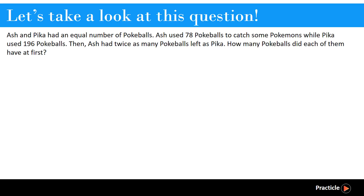Alternatively, we can work with the models in inverse order. First of all, we will look at how Ash had twice as many pokeballs as Pika. And then we will work with how many pokeballs that they each use. Finally, we will look at how they had an equal number of pokeballs. The question then is which method do we use?